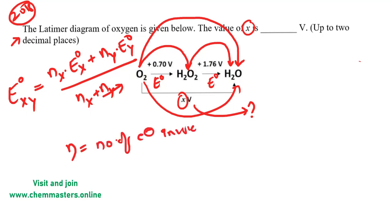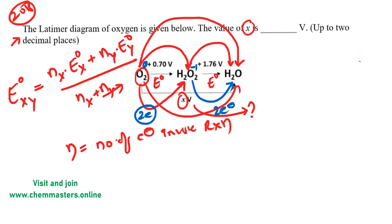In the first step, the conversion of O₂ to H₂O₂: oxygen has a neutral charge whereas in H₂O₂ each oxygen has a −1 charge, involving 2 electrons. So O₂ is converted to H₂O₂ by taking 2 electrons. In the second step, the conversion of H₂O₂ to H₂O also involves 2 electrons. So the total conversion from O₂ to H₂O involves 4 electrons.